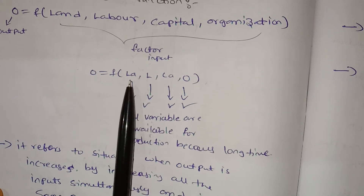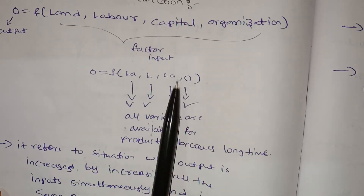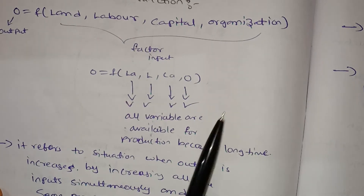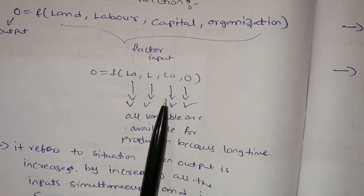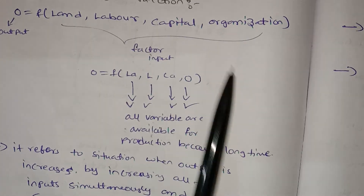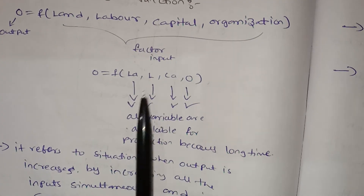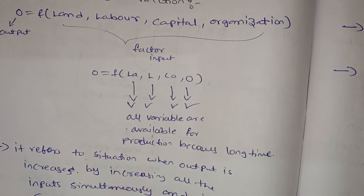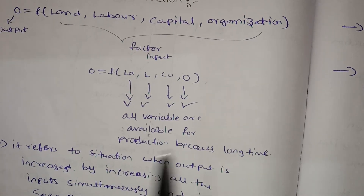In the long run, all factors — land, labor, capital, and organization — are variable. Because we have a long time, such as one month, all variables are available for production.